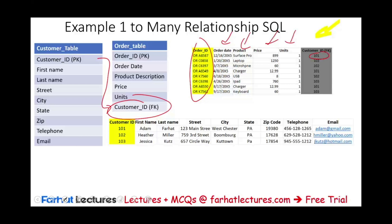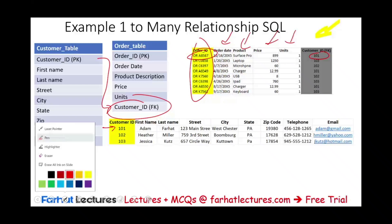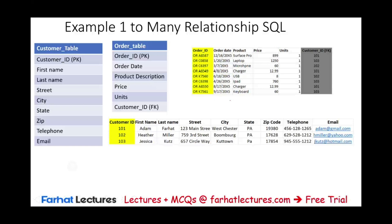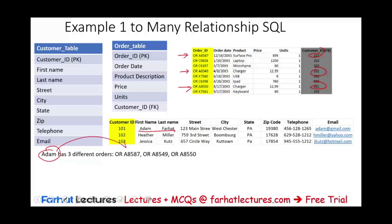For example, customer 101 — who is Adam — purchased a Surface Pro for $899 on a given order date, with a unique order number. So how is this relationship one-to-many? Each customer can have multiple orders. Adam, for instance, has three orders: ORA8587, ORA8549, and ORA8550. So Adam is the one side, and his multiple orders represent the many side.